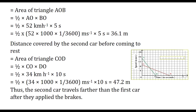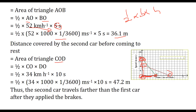For the first triangle AOB: distance equals half into base into altitude, that is half into 5 into 14.4, which gives 36.1 meters. For the second triangle COD: half into 10 into 8.9 (converted to meters per second), which equals 47.2 meters. Since 47.2 is greater than 36.1, the second car traveled farther than the first car after the brakes were applied.